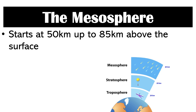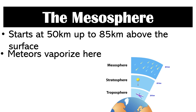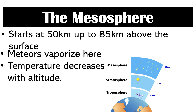The mesosphere is next. This layer starts at 50 kilometers above the surface, up to 85 kilometers. This is where meteors start to vaporize as they enter our planet. And unlike the stratosphere, the temperature in this layer decreases as altitude increases.